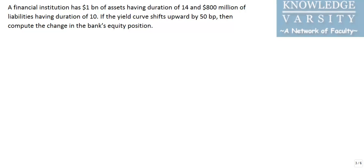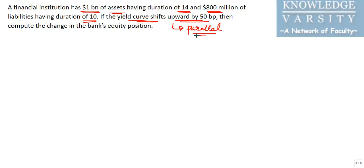In this problem, a financial institution has both assets and liabilities that are mismatched, and the interest rate is changing by a certain basis point. We need to find out the impact of this change on the bank's equity position. The financial institution has $1 billion of assets with a duration of 14, and liabilities of $800 million with a duration of 10. The yield curve shifts upward by 50 basis points — if nothing is mentioned, we assume it is a parallel shift of the yield curve.